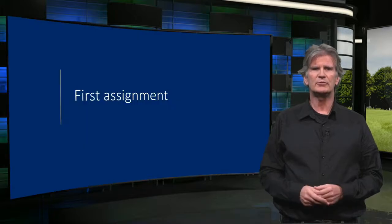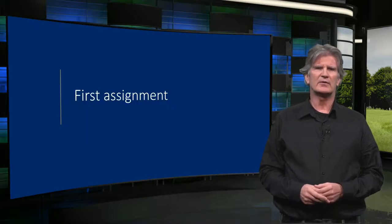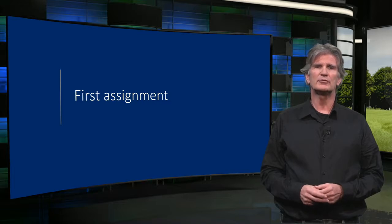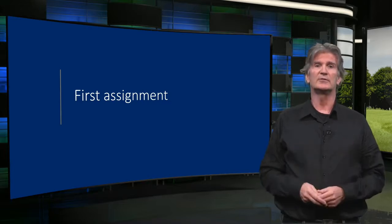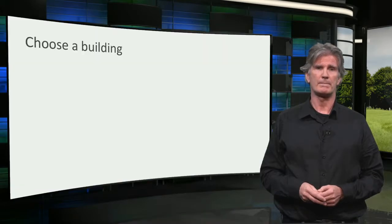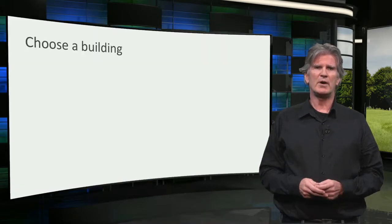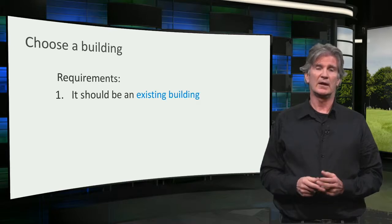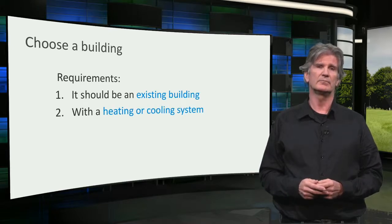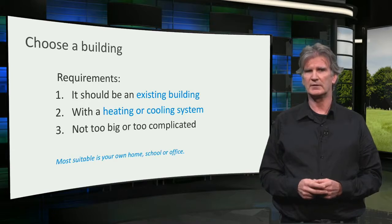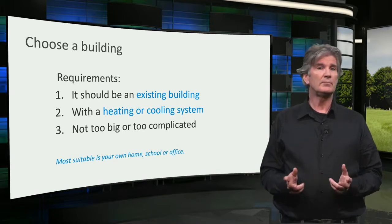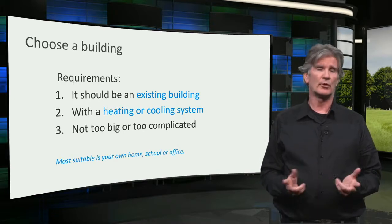As a first assignment, we want you to figure out which energy carriers are used and for which purposes. Therefore, you must choose a building to work with — the building you would like to make zero energy. There are a few requirements: it should be an existing building, it should have a heating or cooling system, and it should not be too big or too complicated. This can be your own house, your school or your office.